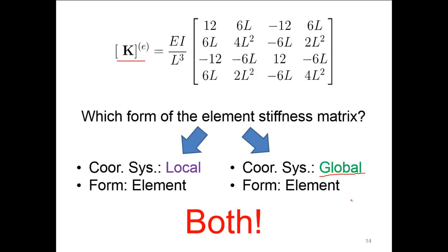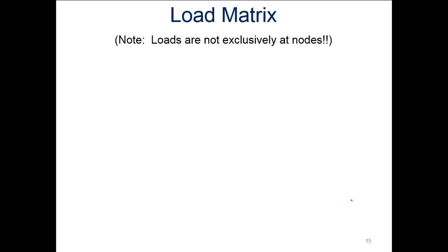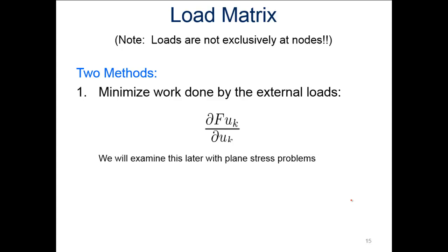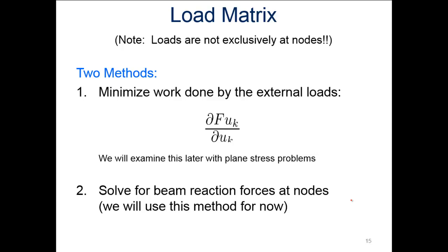For the load matrix, loads are not exclusively at nodes — we can have a distributed load across the whole beam, so we need to be careful. There are two methods: one is to minimize the work done by external loads using the minimum total potential energy formulation, and the other — which we'll do first — is to solve beam reaction forces at the nodes to find the equivalent nodal loading for a given distributed load on a beam element.